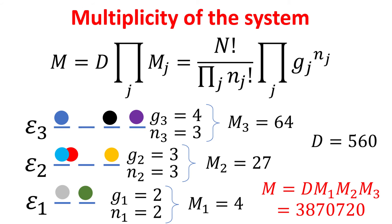For example, consider a three energy level system, with the number of particles and degeneracy for each level as indicated. Using the formulae, we can calculate the multiplicity M for each level, and the multiplicity D. We can work out the total number of arrangements in this system to be about 3.8 millions, a very large number indeed.